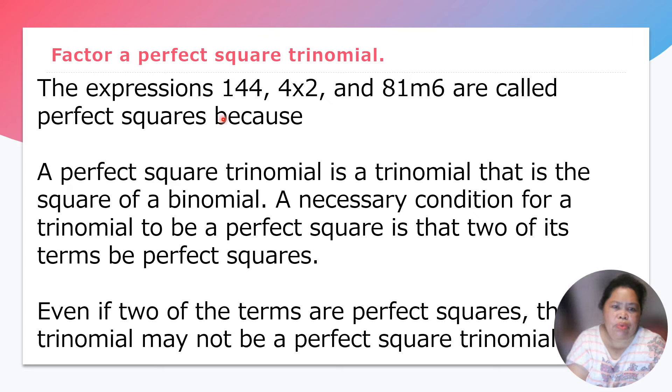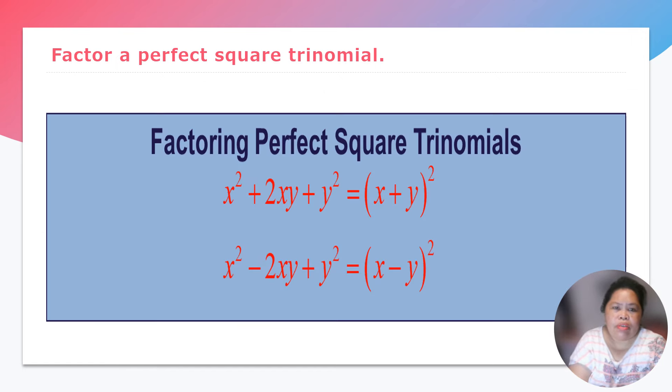Alright, so the expressions 144 times or 4 times 2 and 81 raised to 6 are called perfect square. So these are the perfect square. Because the perfect square trinomial is a trinomial that is a square of a binomial. A necessary condition for a trinomial to be perfect square is that two of its terms be a perfect square. Even if two of the terms are perfect squares, the trinomial may not be a perfect square trinomial. So the factor of perfect square trinomial, we have x squared plus 2xy plus y squared that's equal to x plus y squared. So remember in our special product, we have this and the product is here. This time, in factoring, it's a lot the other way around. So we have the factors already and we will go back to the special product.